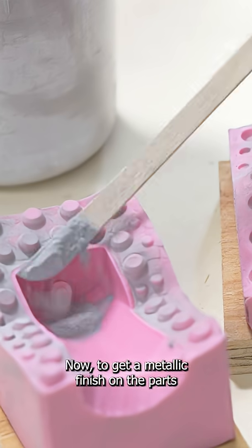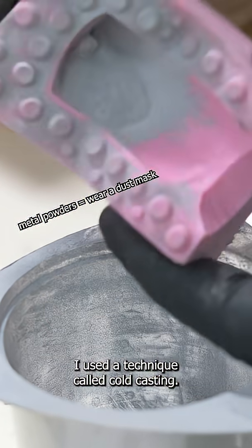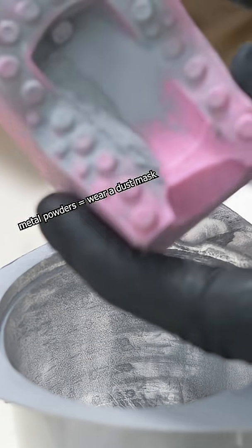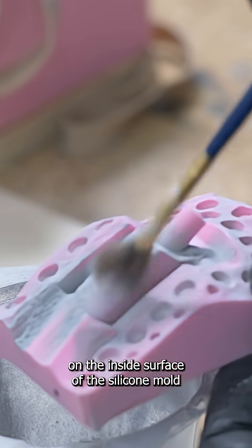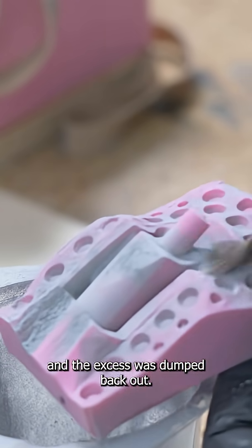Now to get a metallic finish on the parts that were supposed to look like metal I used a technique called cold casting. A metal powder, in this case aluminum, was dusted on the inside surface of the silicone mold and the excess was dumped back out.